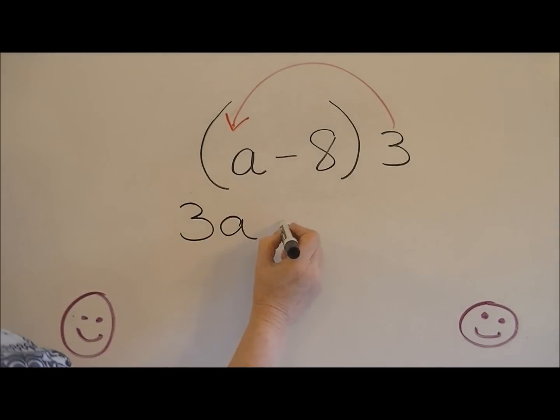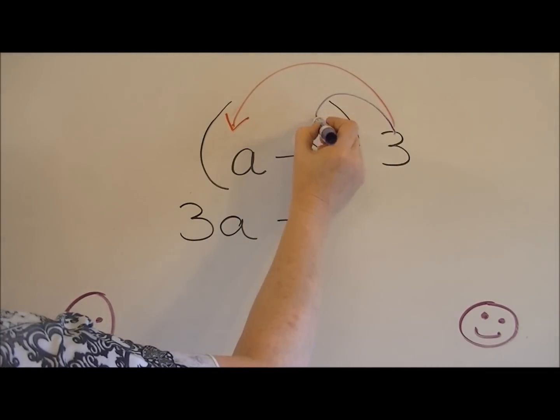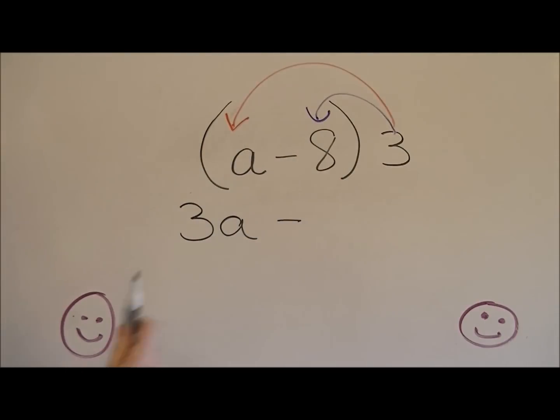We're going to drop our minus sign down. And now we can multiply three times the eight, which is 24. And that's the answer to that problem, 3a minus 24.